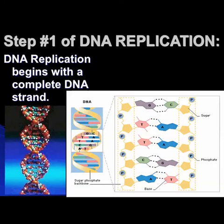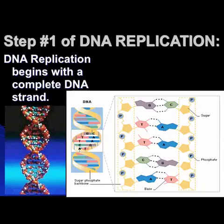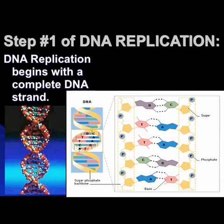DNA replication begins with a complete strand of DNA. We can see the model on the left showing the spiral staircase with C, G, T, A bases. We've untwisted part of it and can see the triple bonds between C and G and the double hydrogen bonds between A and T. Also, the two-ring and one-ring setup must be maintained so the spacing is right. If there's an A opening, we can only put a T in there for bonding and size reasons.